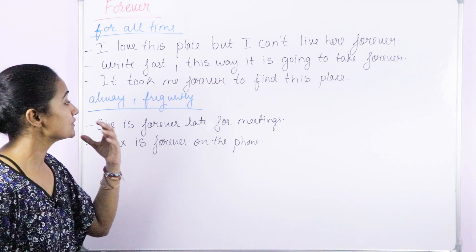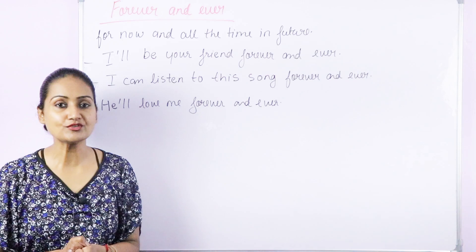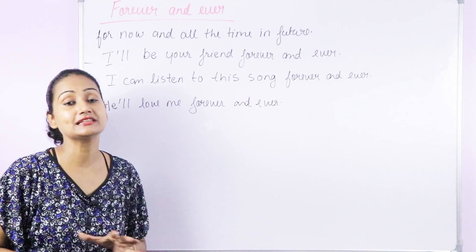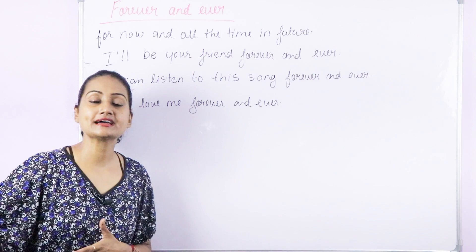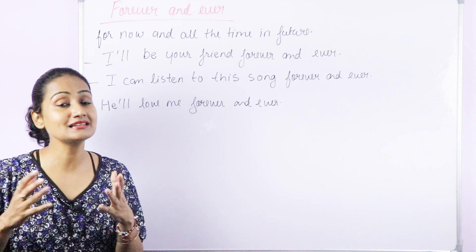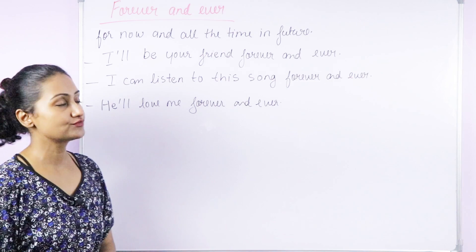Now let's see where we use 'forever and ever.' This means for now and all the time in the future — something exists in the present, will continue in the future, and will never stop. For example: I'll be your friend forever and ever — I'll always be your friend. I can listen to this song forever and ever — it's my favorite song, I love it. He will love me forever and ever. Anything that exists now and will continue forever and never stop.